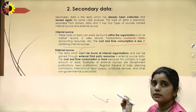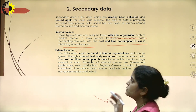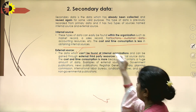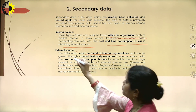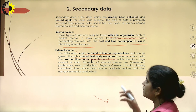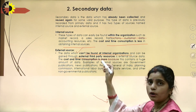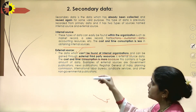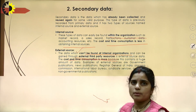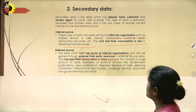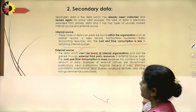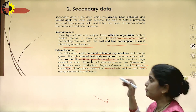In the external source, data that cannot be found within internal organizations can be gained through external third-party resources. Here, an external third party is involved, so the cost and time consumption is more because it contains a huge amount of data. Examples of external sources include government publications, news publications, the Registrar General of India, the Planning Commission, the International Labour Bureau, and many more.